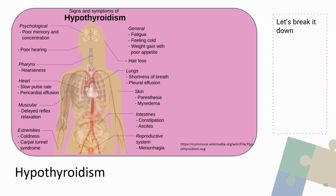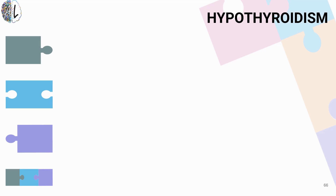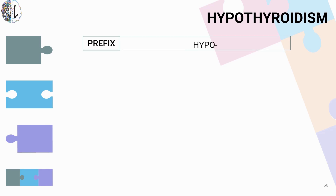First up, we have the term hypothyroidism. We're going to start by breaking it down because it will give us all of the clues we need to understand what's happening here. Let's go into our word breakdown for hypothyroidism — if you want to try it on your own, please hit pause. The prefix here is hypo, which refers to being low, too low.